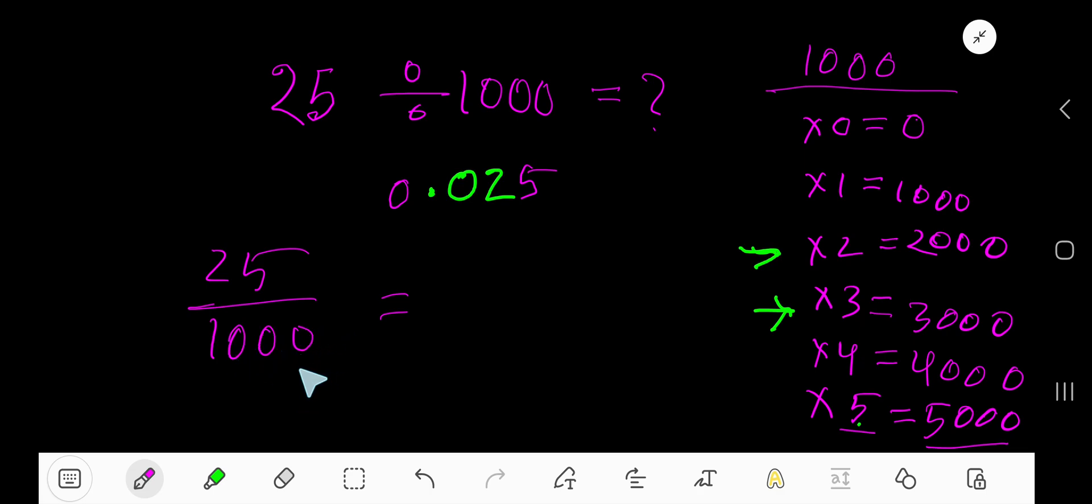like 10, 100, or 1000, then write the numerator and then move the decimal according to the number of zeros. After 1, 2, 3 zeros, the decimal point will move 3 digits: 1 digit, 2 digits, then 3 digits. Yeah, 0.025. This result and this result are similar.